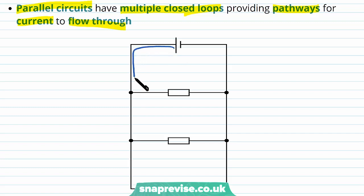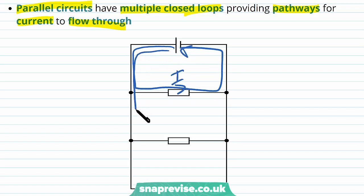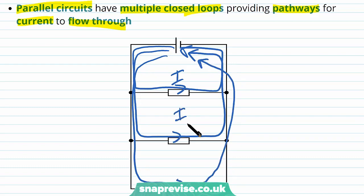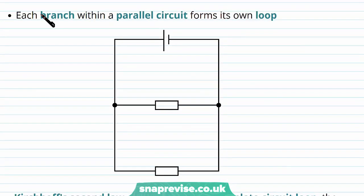The current could go along this branch and down this path — that's one way. Then the current could go along this branch and take that path, or the current can go along this third branch and follow this path back to the cell. So we can see that we've got three different current loops here, which is why this is a parallel circuit — it's got more than one pathway for the current to flow through.